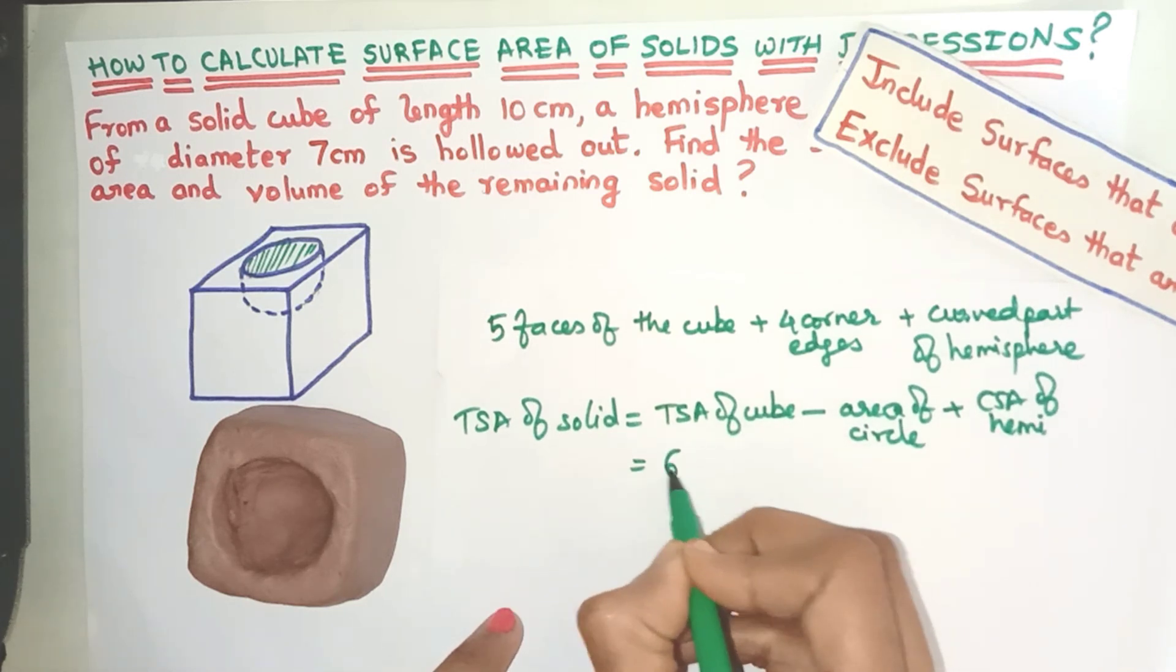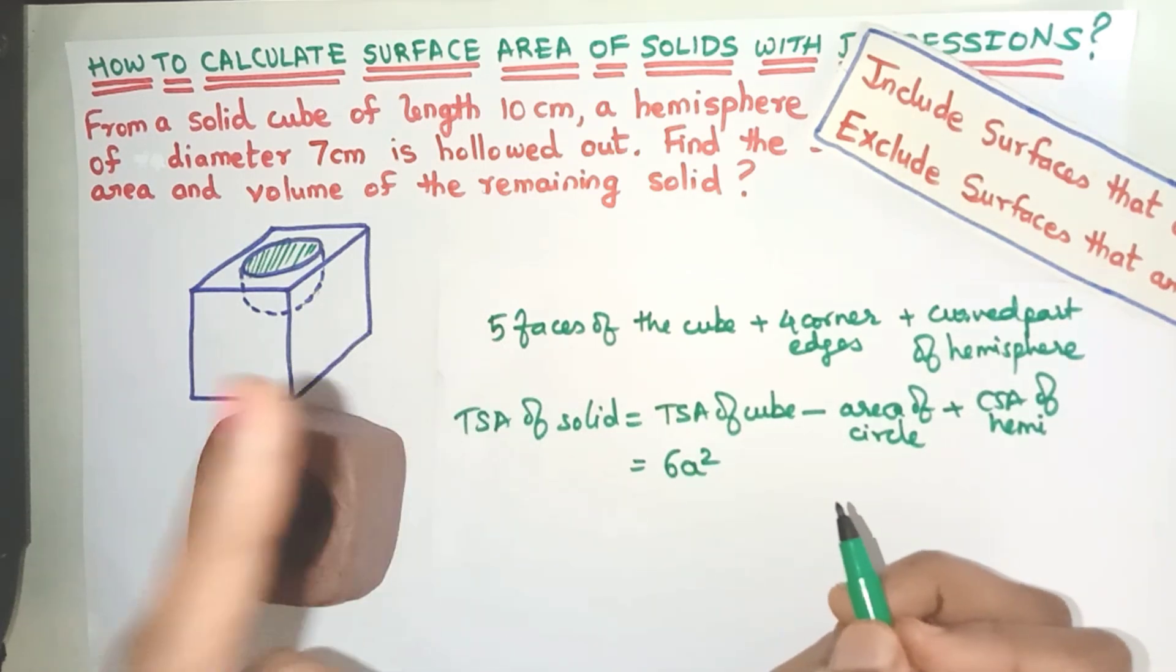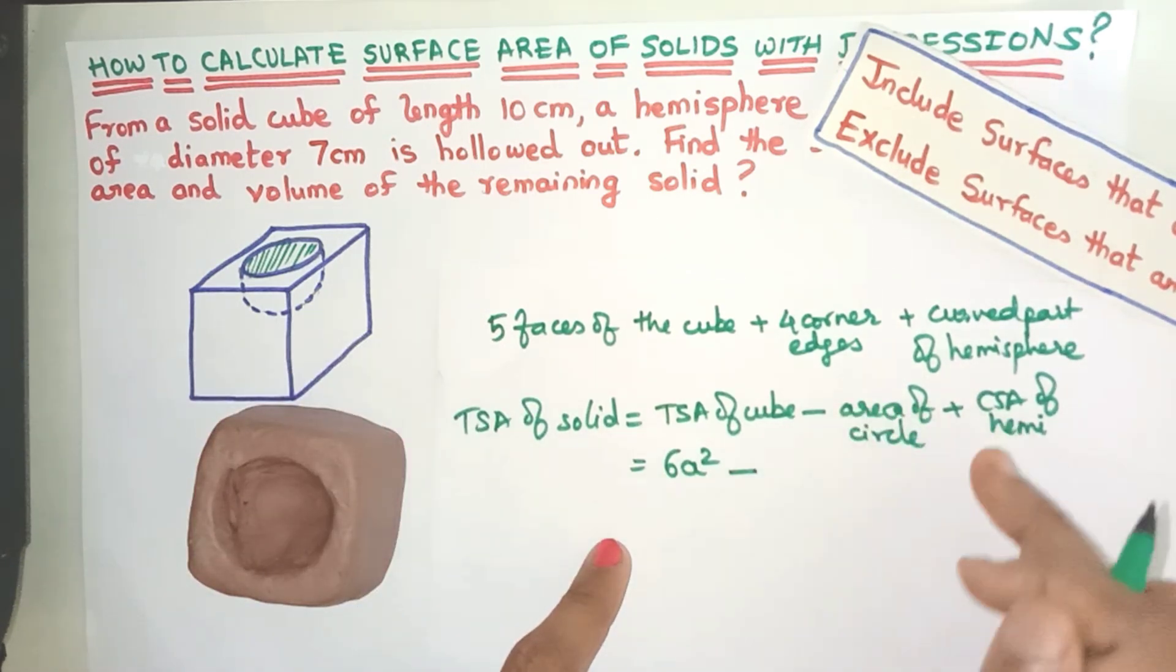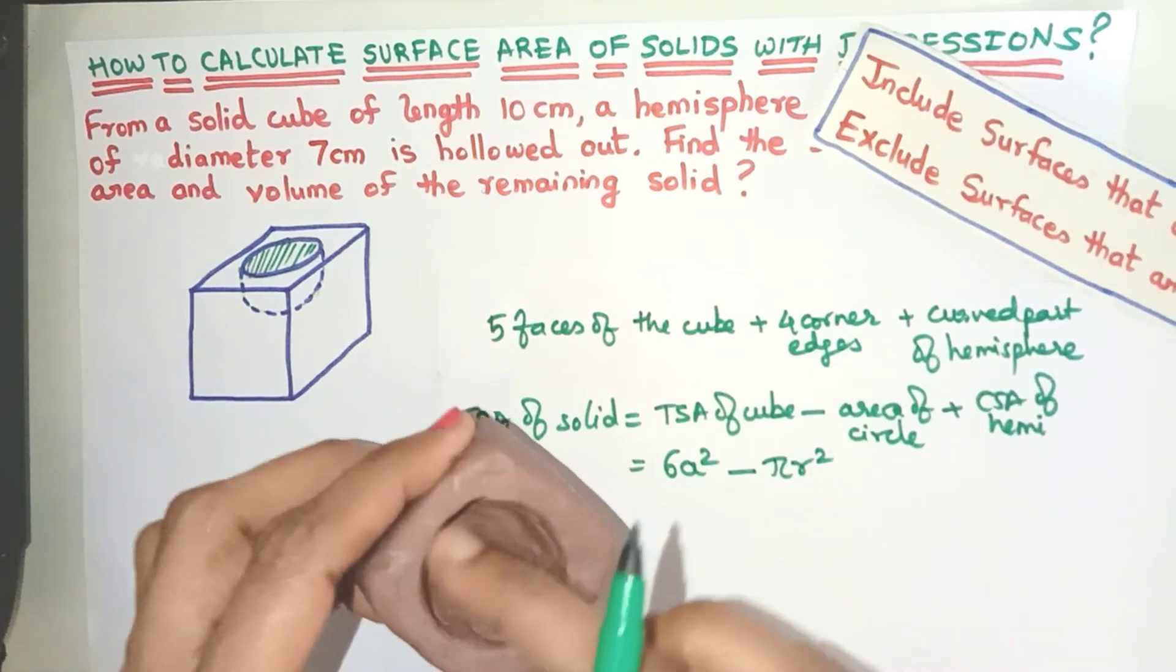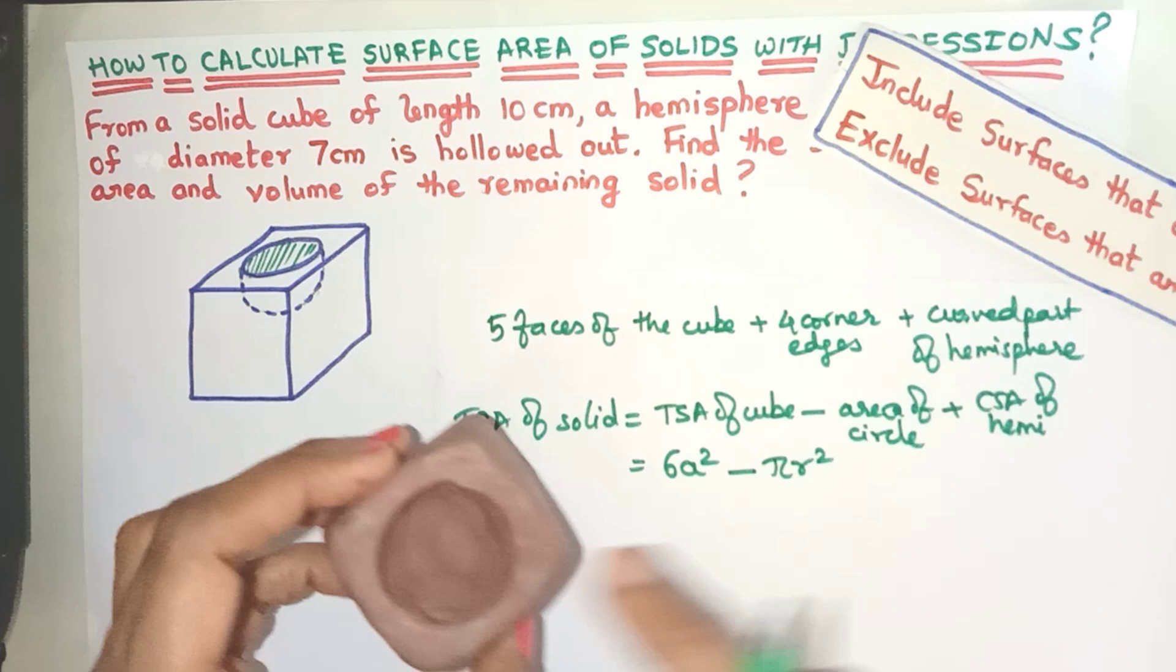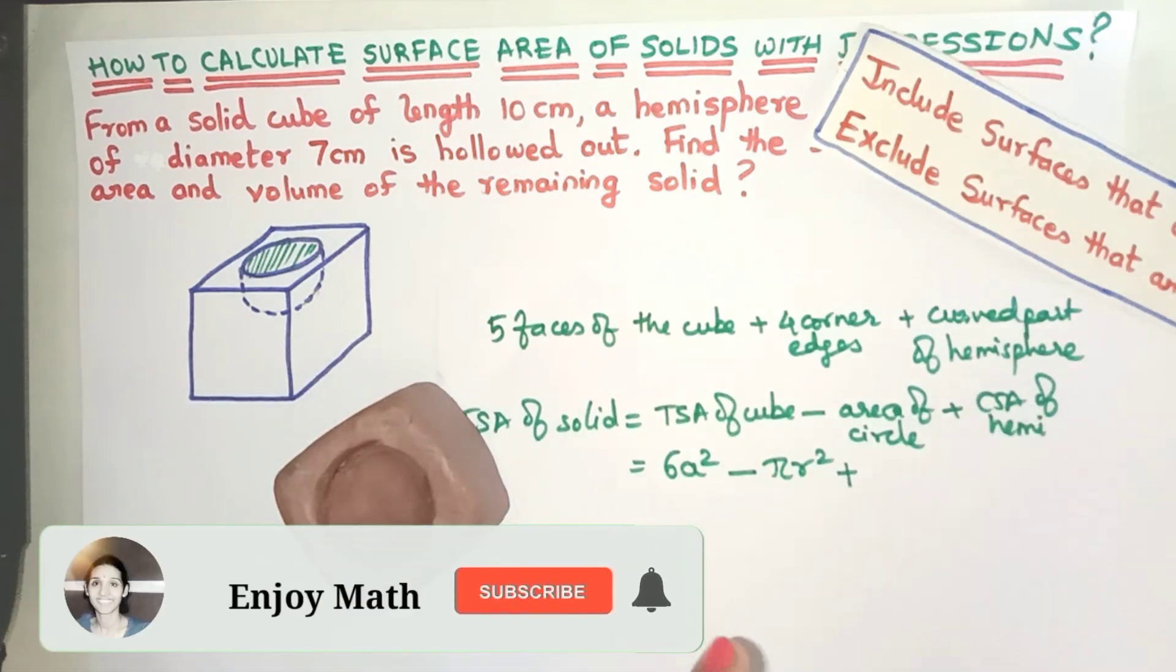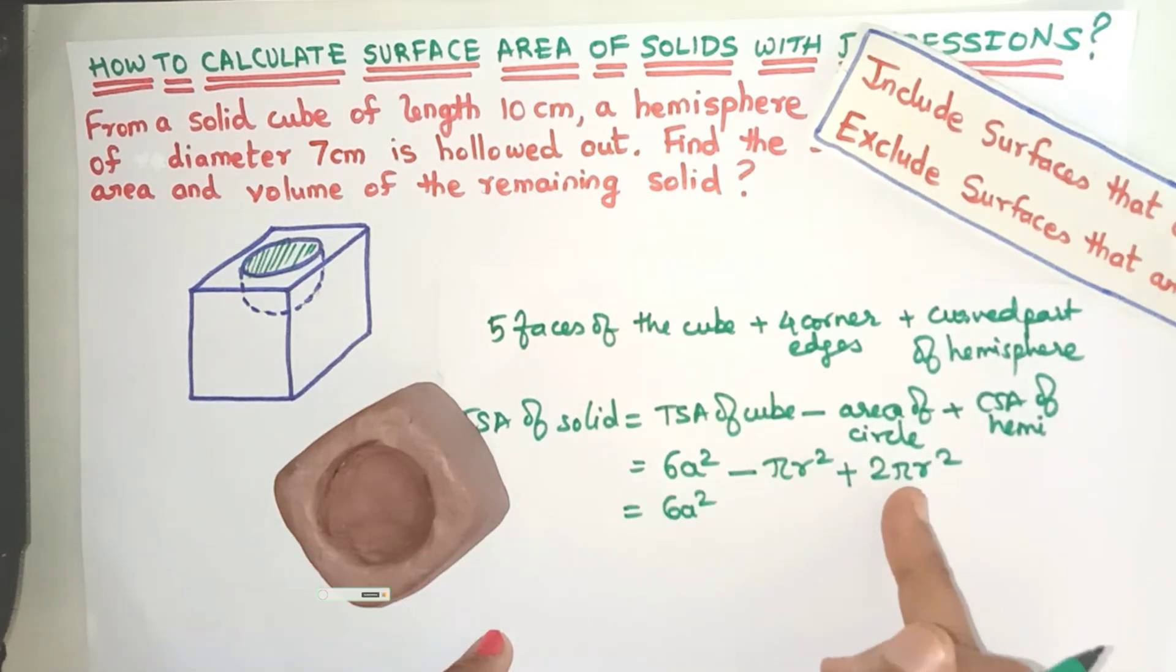So TSA of the cube means 6a² where a is the side of the cube, minus area of the circle that is πr² where r is the radius of the hemisphere, plus the CSA of the hemisphere - we already know the formula, yes it's 2πr². Now this 2πr² minus πr² will give us plus πr².